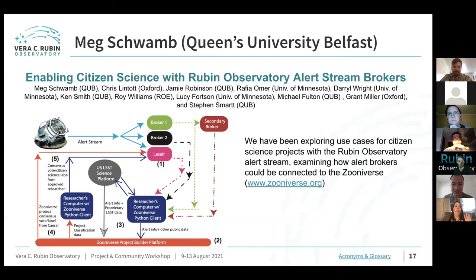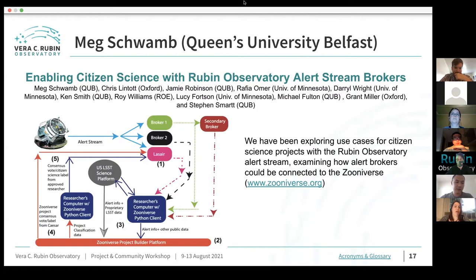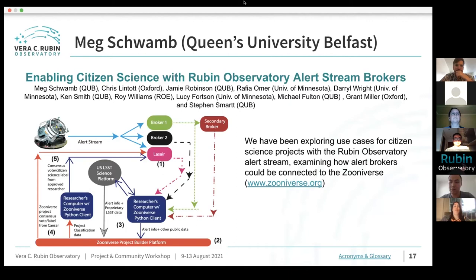We've been partnering with Zooniverse, the largest platform for citizen science. The idea is thinking about how we can take LASAIR — the UK broker — and take the annotations and alerts coming in now with ZTF/LASAIR and put them on the Zooniverse platform. There are many brokers all doing different types of things, and in the Rubin era, when data is flowing, you need to decide whether to use a telescope or improve your algorithms to decide what's interesting.